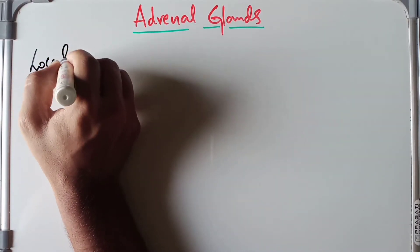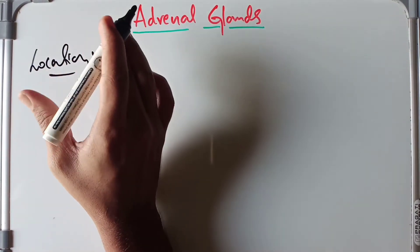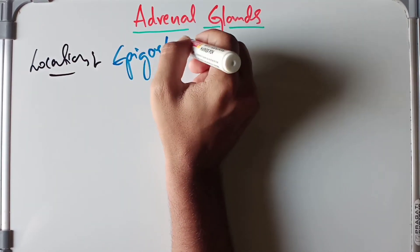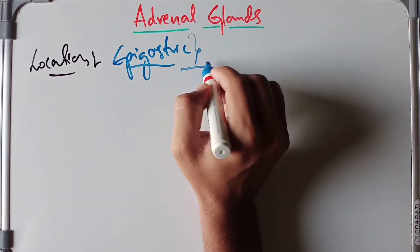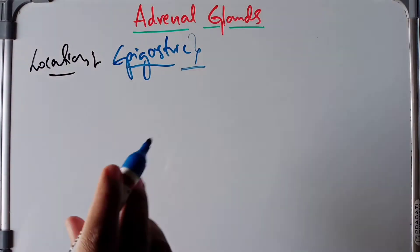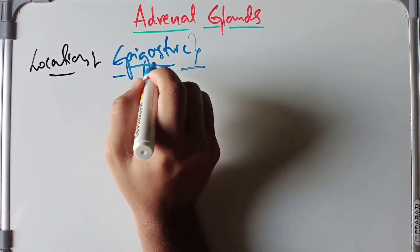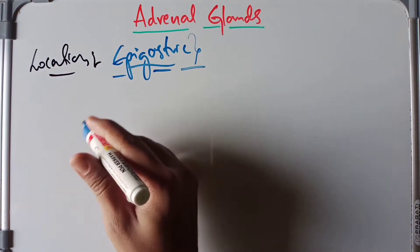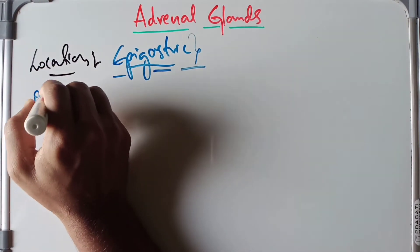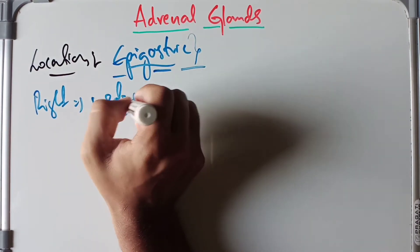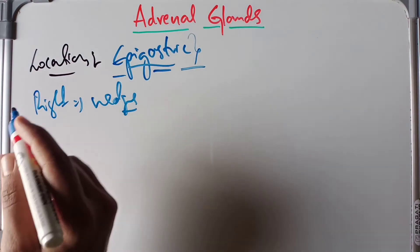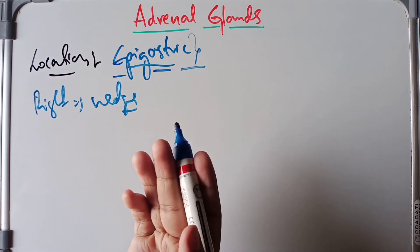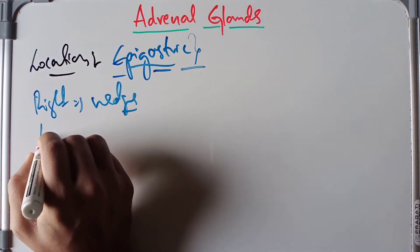The suprarenal glands are located in the epigastric region of the abdomen, lying anterior-superior to the upper part of each kidney. The right suprarenal gland is wedge-shaped and situated between the diaphragm and the inferior vena cava. The left suprarenal gland lies between the diaphragm posteromedially and the stomach anteriorly.